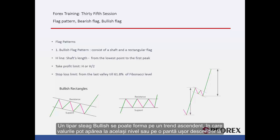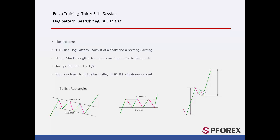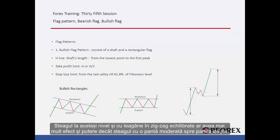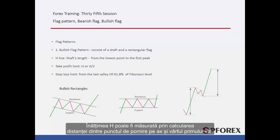A bullish flag pattern can be formed on an upward trend, in which waves may have a level shape or a gentle downward slope. A flag with level and steady zigzag swings would have more effect and power rather than a flag with a moderate slope towards the bottom. Height can be measured by calculating the distance between the starting point on the shaft and the peak of the first wave.